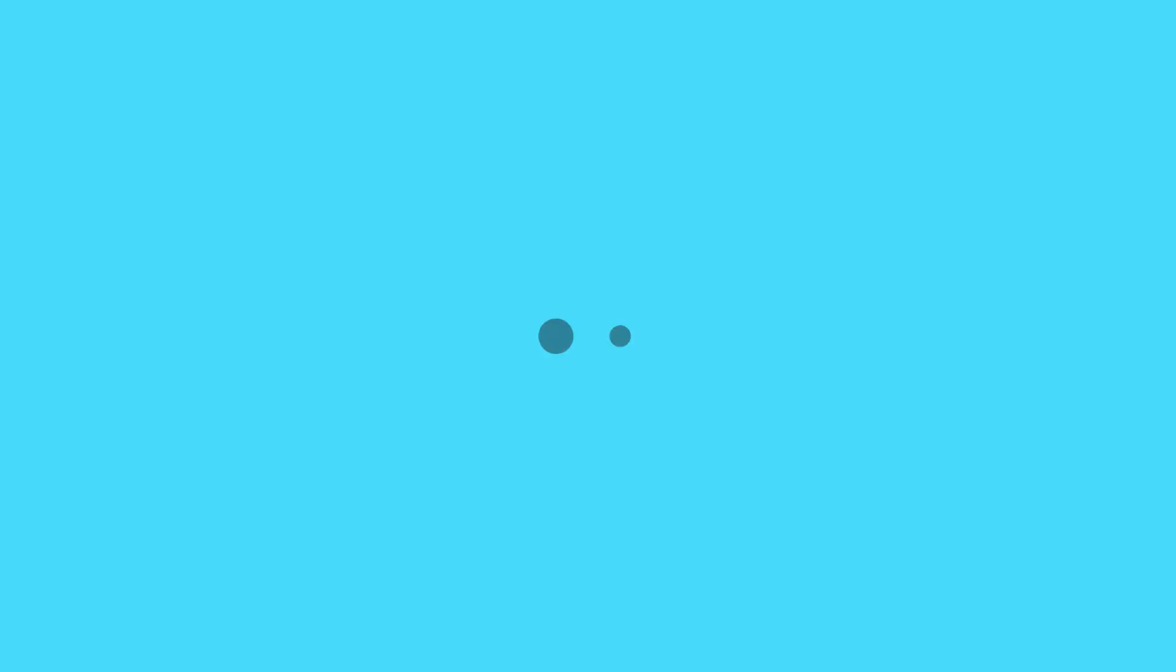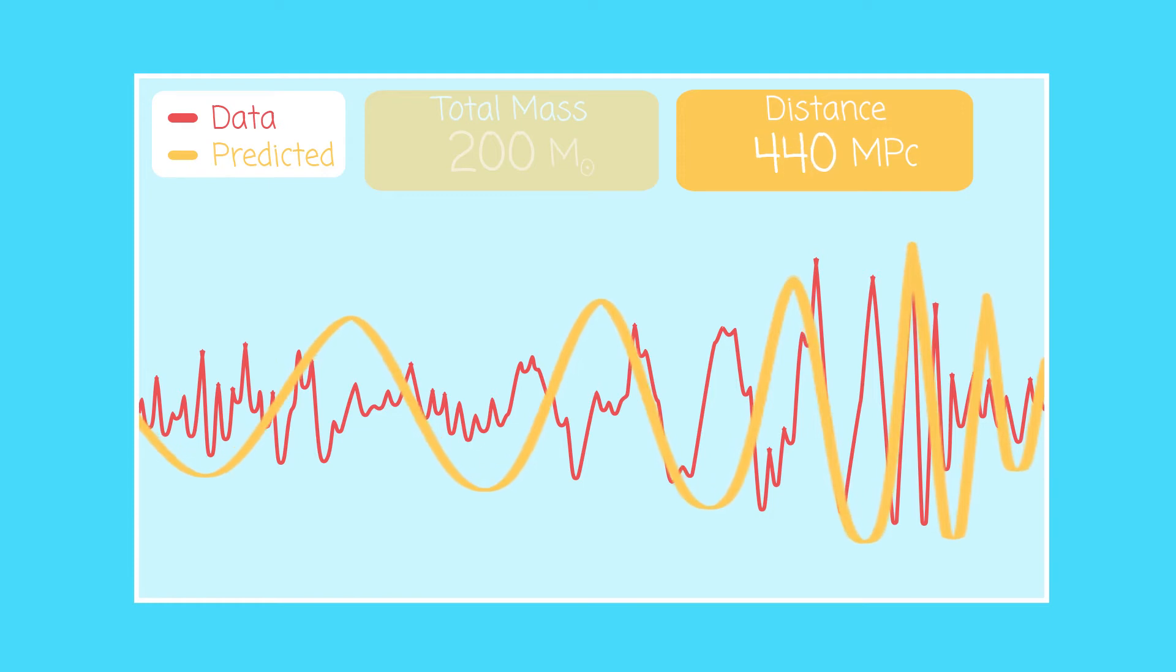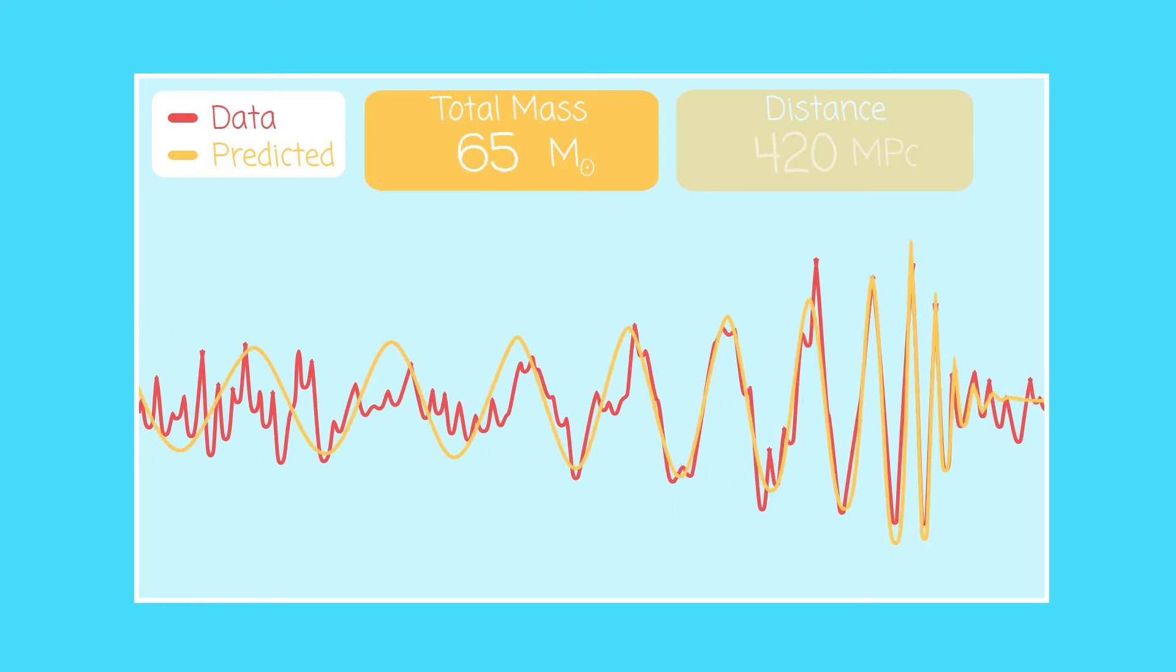To determine the mass of the black holes and their distance, we can compare with theoretical models. The parameters of the model are adjusted until the predicted signal matches up to the data. The closer the black holes, the larger the amplitude of the detected signal. The mass of the black holes can be changed. The lower the mass, the higher the frequency. This gives an initial first guess which is produced by automatic algorithms within minutes of a detection.